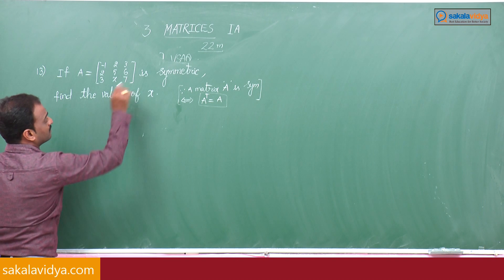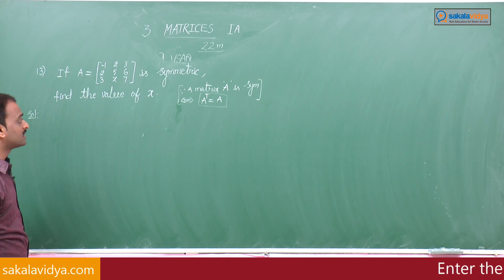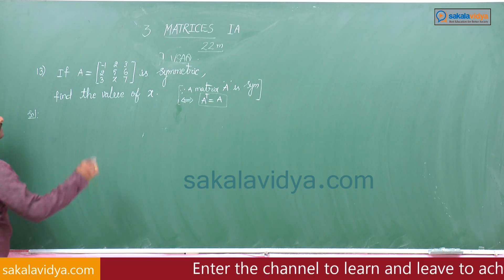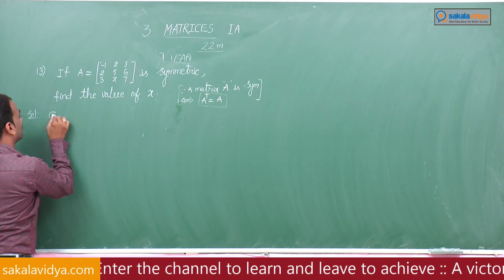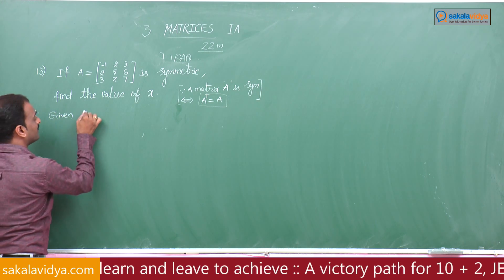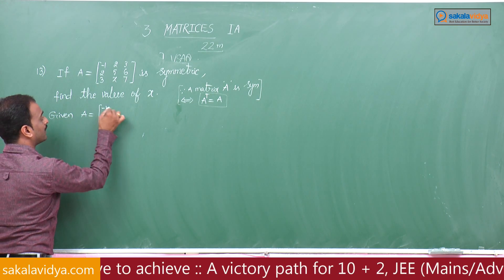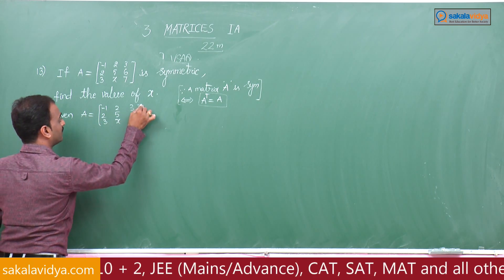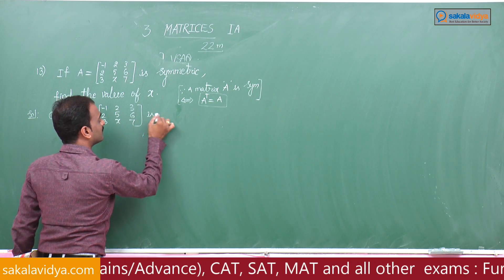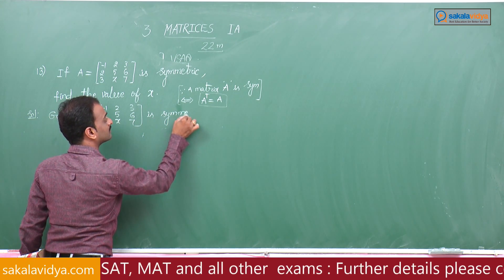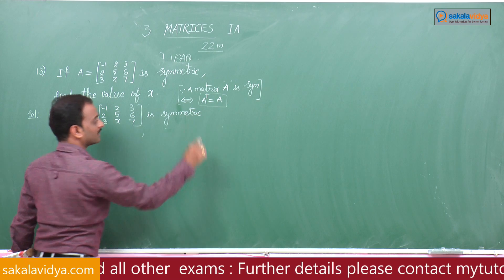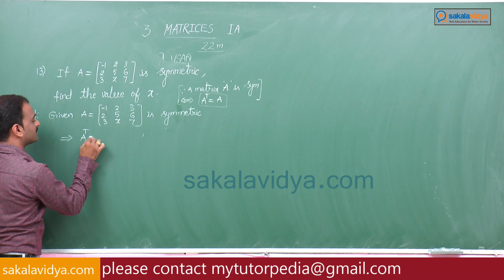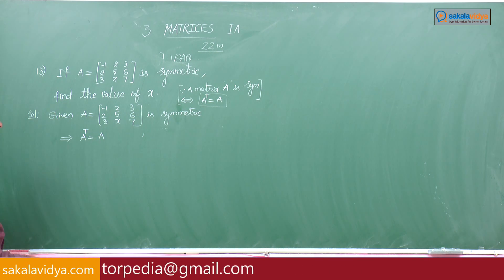So, if A is symmetric, the given matrix is symmetric, that means its transpose is also equal to the same matrix. Since A is symmetric and equals minus 1, 2, 3, 2, 5, 6, 3, x, 7, that implies A transpose equals A.